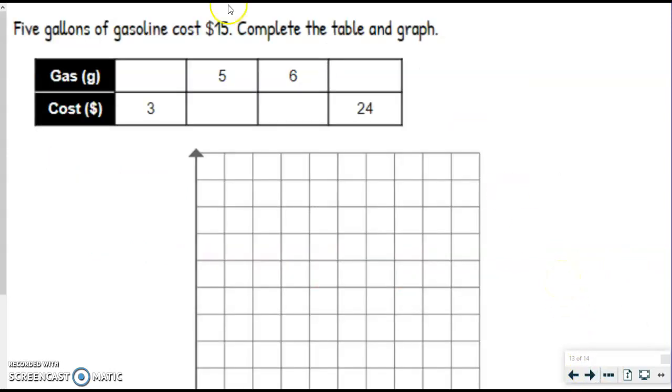But before we graph, we need to complete our table just like we learned in the last video. So it says five gallons of gasoline cost $15. Complete the table and graph. So we just want to be able to fill in what we have in the table first and then we'll look for that comparison. So I noticed that five gallons of gasoline is on here, so we know that we're going to put the 15 right below it. And the connection between five and 15, you might notice, is times three. So that means the gallons are always going to be times three to get the cost.